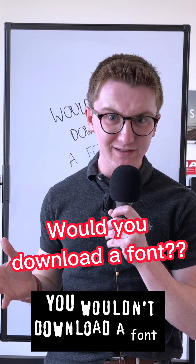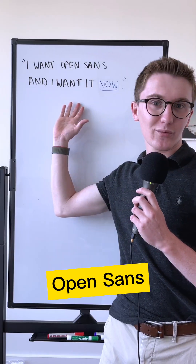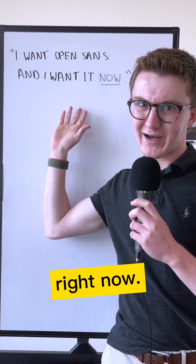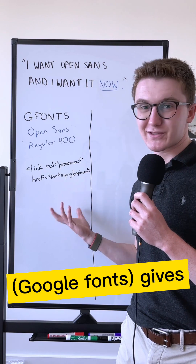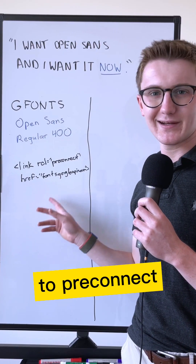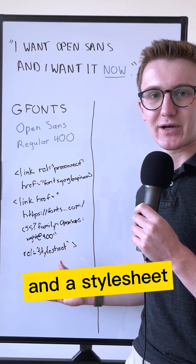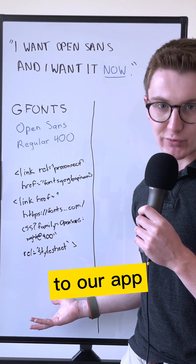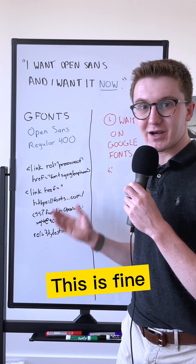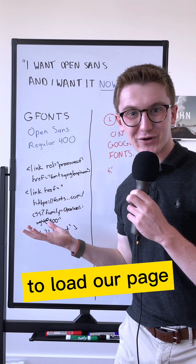How do you download a font? Let's see how. Let's say I want Open Sans right now. This gives us all the tags we need, like a link to pre-connect to Google to speed up our fonts, and a style sheet to add these fonts to our app. This is fine, but we gotta wait on Google Fonts to load our page.